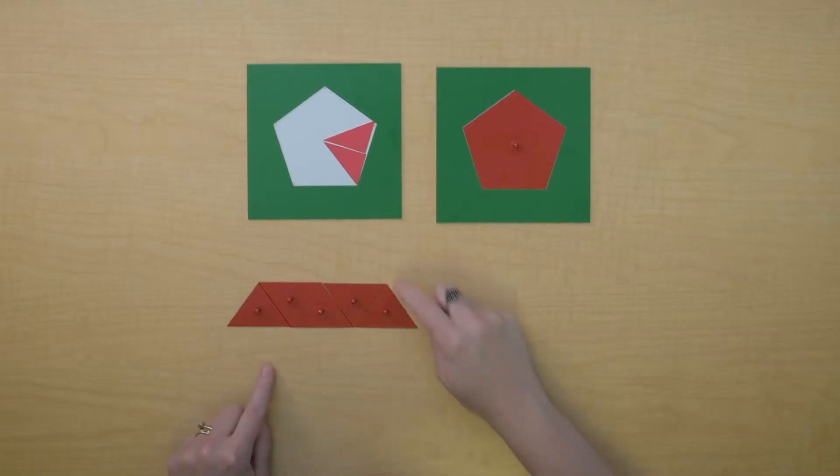We know how to find the area of a trapezoid. We take the major base plus the minor base times half the height. So we're going to see if that's going to help us as we think about this pentagon.